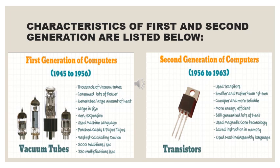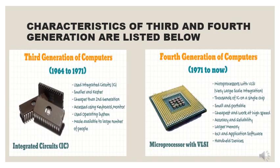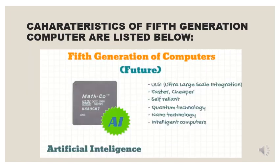Now let us take a look at the characteristics of different generation computers. Characteristics of first and second generation computers are listed below. Characteristics of third and fourth generation computers are listed below. Characteristics of fifth generation computers are listed below.